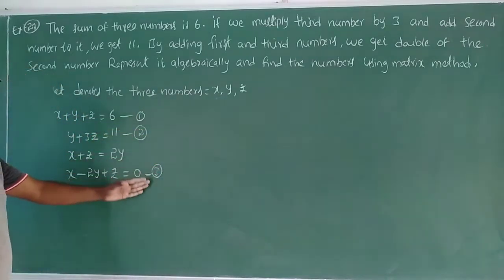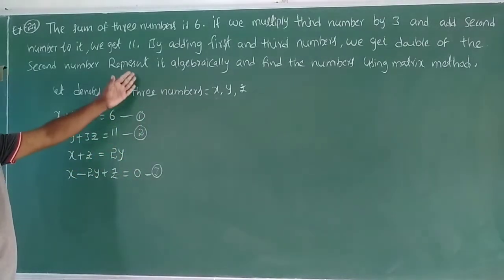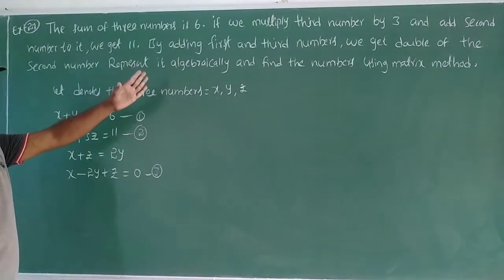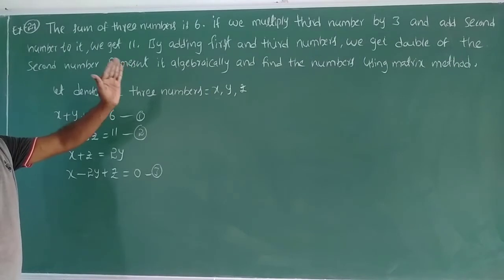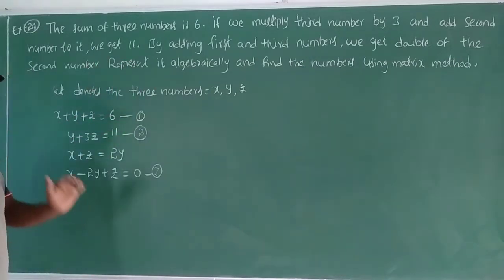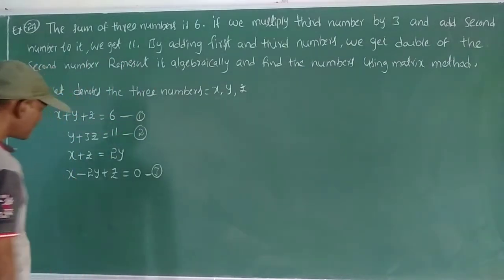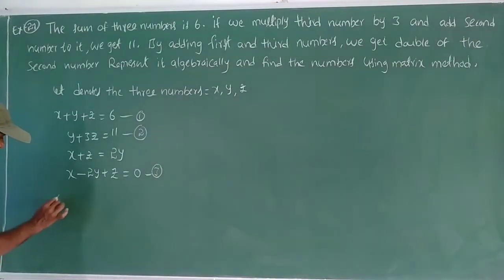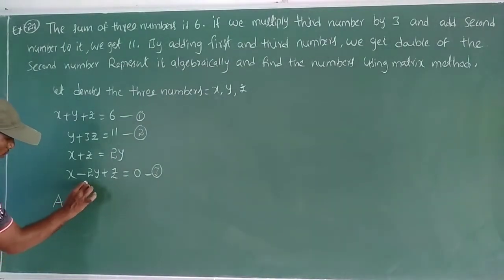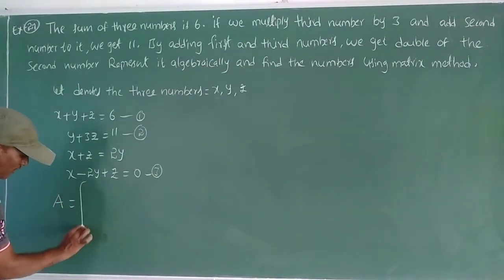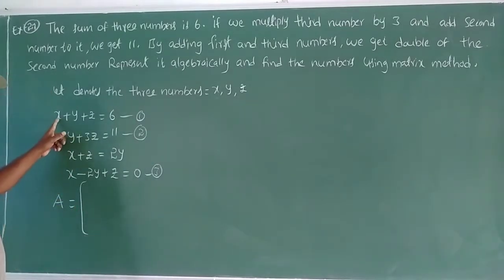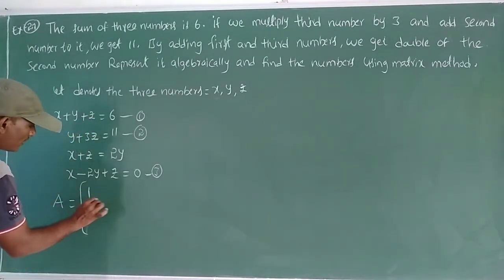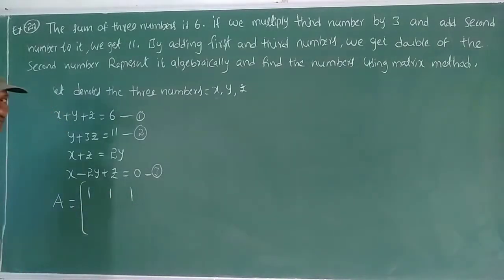These three equations together. Using matrix method, capital A is the coefficient matrix. First equation x, y, z coefficients: 1, 1, 1.